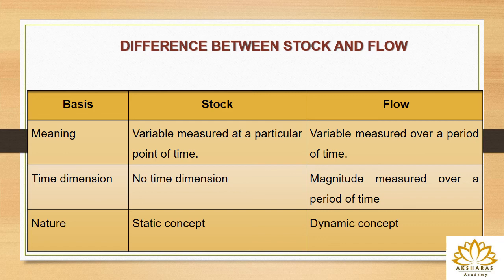The difference between stock and flow: in terms of meaning, stock is a variable measured at a particular point of time, while flow is a variable measured over a period of time. In terms of time dimension, stock has no time dimension — it specifies a particular date — whereas flow is measured over a period of time such as during a year or a month. In terms of nature, stock is a static concept — on a particular date the quantity is fixed and does not change — whereas flow is a dynamic concept where during the year or month everything can change.